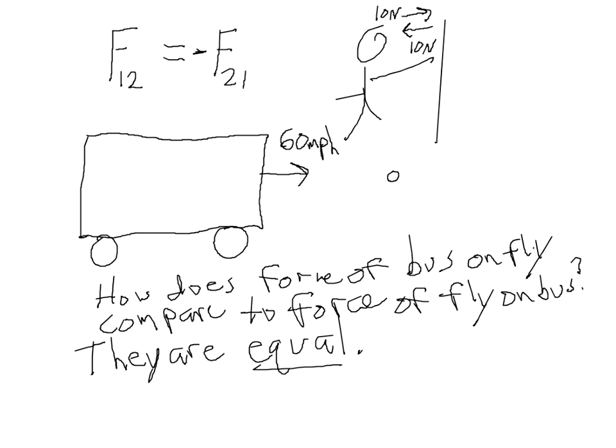How is that possible? Well, because your intuition is actually not about the forces involved. Your intuition is actually about the acceleration that happens as a result of those forces. Newton's Second Law is the answer to how this seemingly crazy thing can be true — that these two forces are equal, even though the fly dies and the bus doesn't even notice.